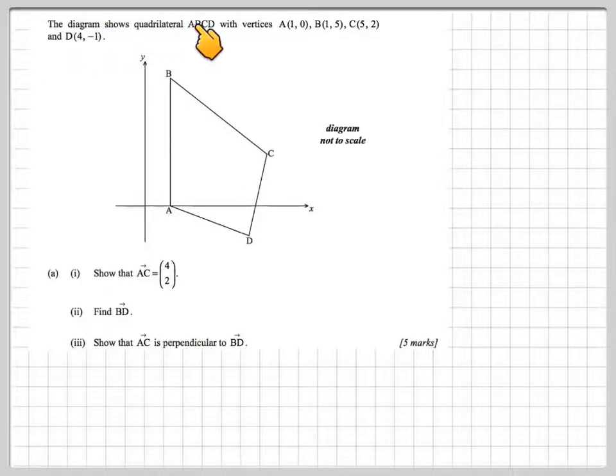The diagram shows a quadrilateral ABCD with vertices at A(1,0), B(1,5), C(5,2), and D(4,-1).